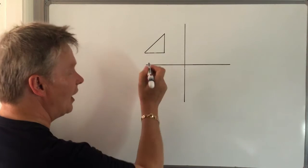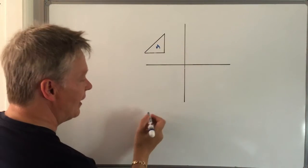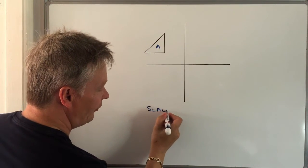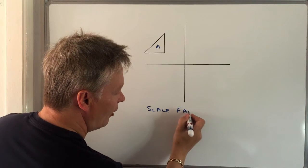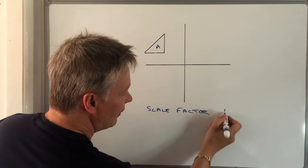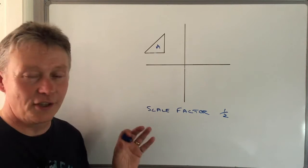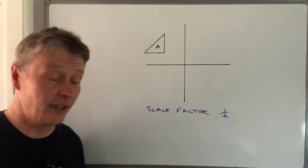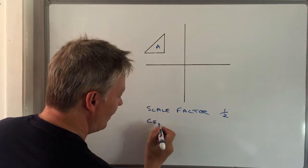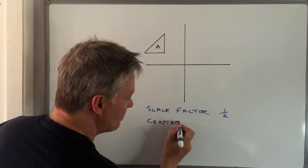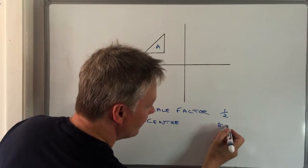where it'll say something like enlarge shape A by a scale factor of a half, and the other bit of information it'll give you is from the centre, and let's say in this particular case 8, 1.